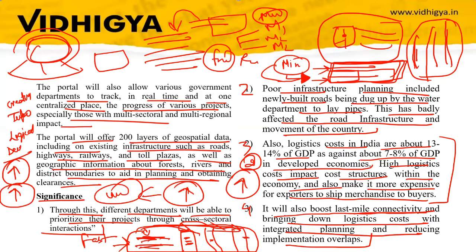This is a platform where various ministries and departments come together to discuss cross-sectoral projects. The project is then assigned to an entity and completed — ensuring that cost is less, time taken is less, and it helps in creating better infrastructure. That is the main objective of PM Gati Shakti National Master Plan.